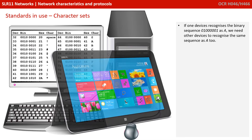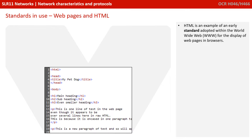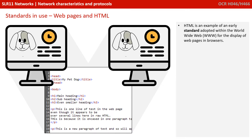For example, let's look at character sets as a standard. If one device recognises a binary sequence as a capital A, we need other devices to recognise the same sequence as a capital A as well. HTML is an example of an early standard adopted within the World Wide Web for the displaying of web pages in browsers.